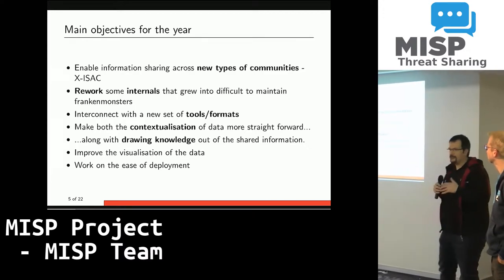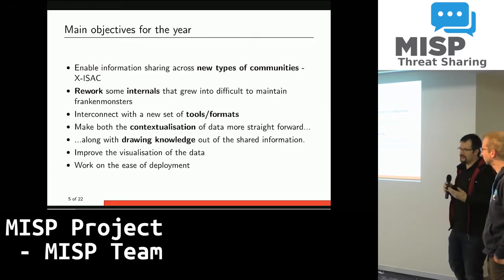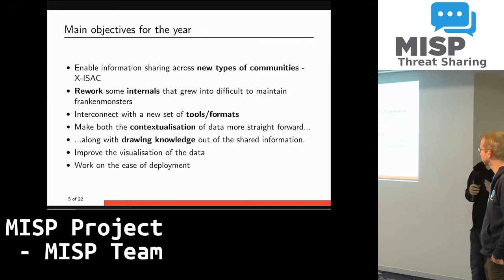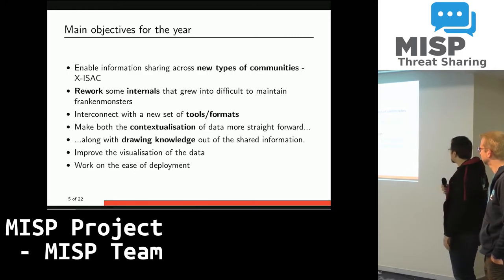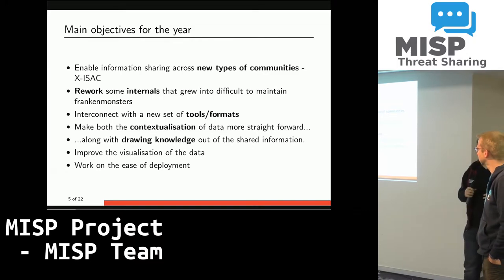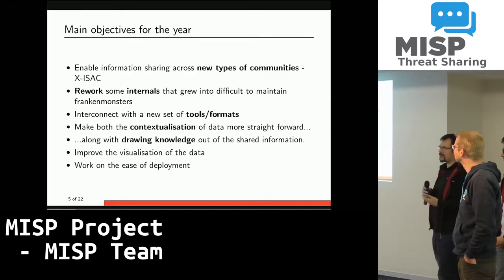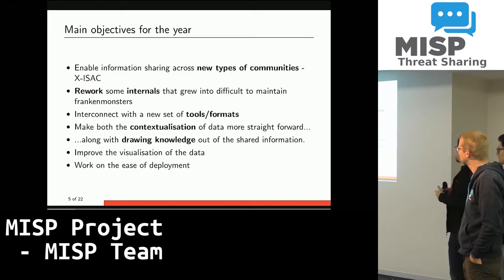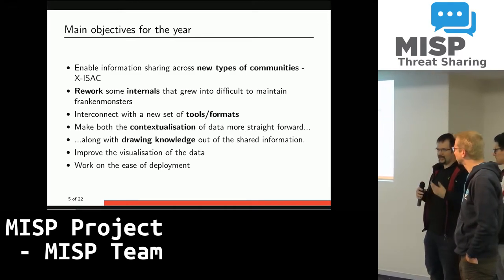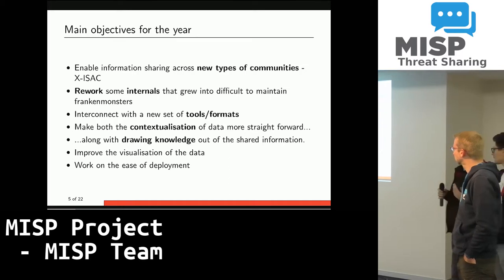Let's talk about our objectives and what we've done to achieve them over the past year. One of the main pillars of what we've been doing is to get people engaged with information sharing — not necessarily people in the same sector of activities, but branching out to other types of communities. We've seen direct benefit from these other communities sharing information back with us. Our main goal with MISP is to increase information sharing at large, which should not exclude other types of organizations.